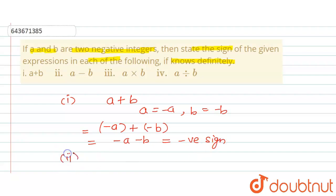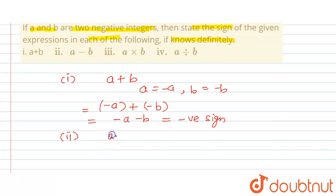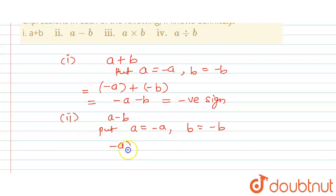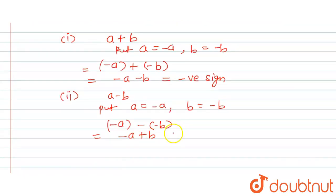Now for the second part, a minus b: since a and b are two negative integers, a equals minus a and b equals minus b. This becomes minus a minus minus b, which equals minus a plus b. The result can be either positive or negative — it depends on the values. If a is greater than b, the sign is negative; if a is less than b, the sign is positive. So the sign is either positive or negative.